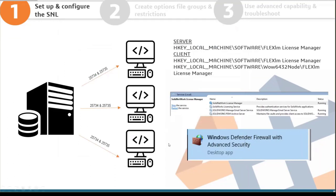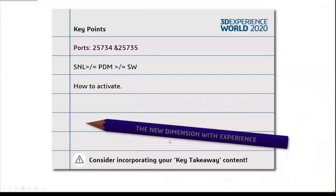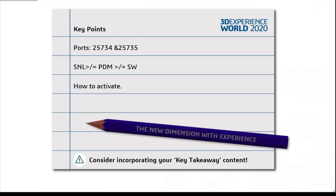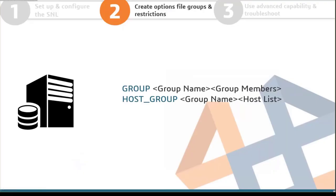Key takeaways from SNL setup and configuration: it uses ports 25734 and 25735; the SNL must always be the greatest version compared to PDM and SolidWorks clients; you can make port exceptions and check connectivity; and the last step is how to activate — which leads into creating the options file.